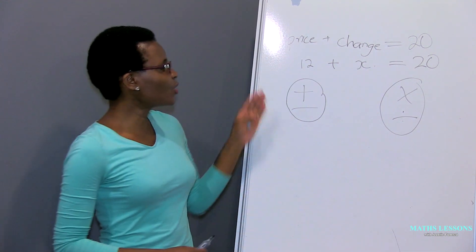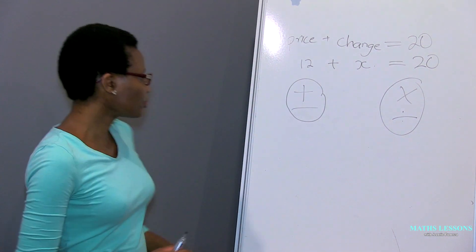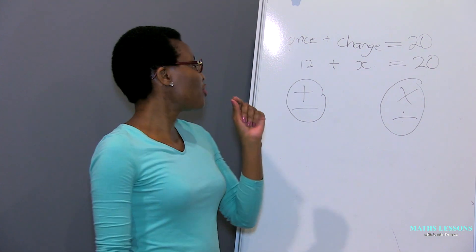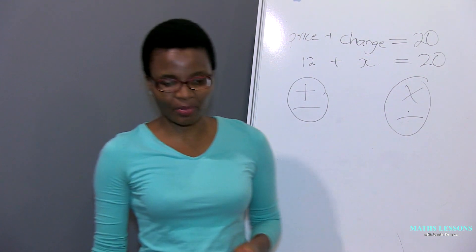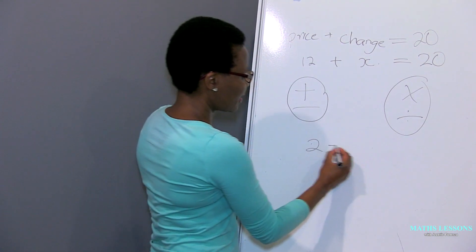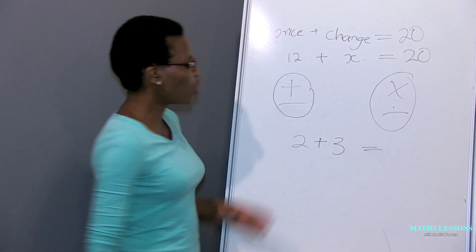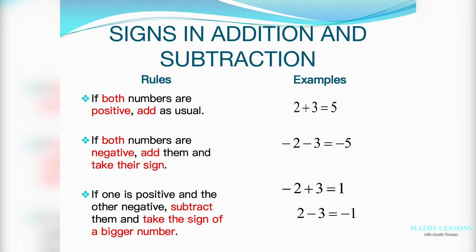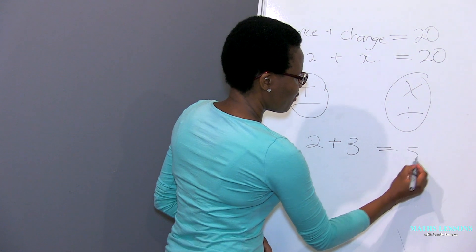Let's start with the rules for addition and subtraction. The first rule: if both numbers are positive, you continue and add the same way you were taught in grade one or two — you just add and you're going to get a positive answer, like two plus three equals five.